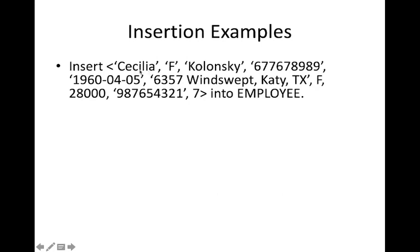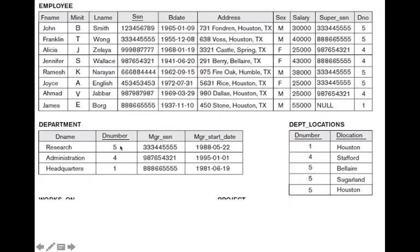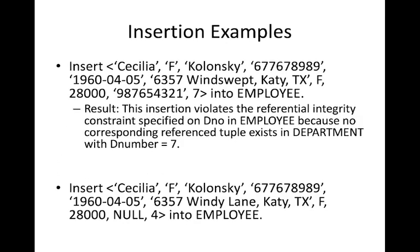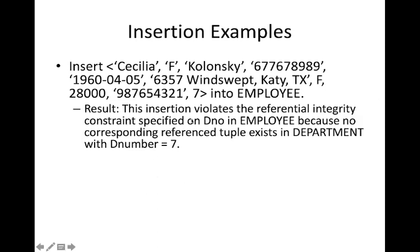Another example inserts 'Cecilia' with a new SSN value — no violation there. But the department number field is given as 7. Department number is a foreign key, so it must be the primary key of some other table. If we check the department table, there is no department with department number 7. So we cannot assign department number 7 to that employee. This insertion violates the referential integrity constraint on department number in employee, because no corresponding tuple exists in the department table with that number.